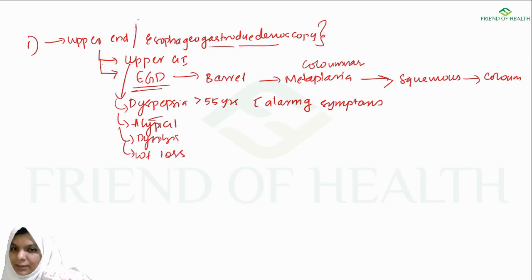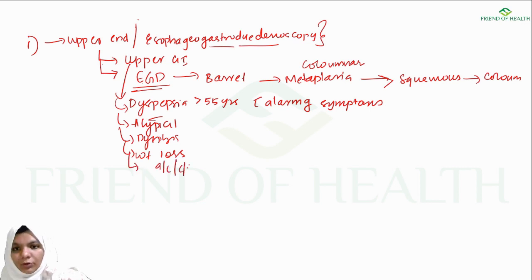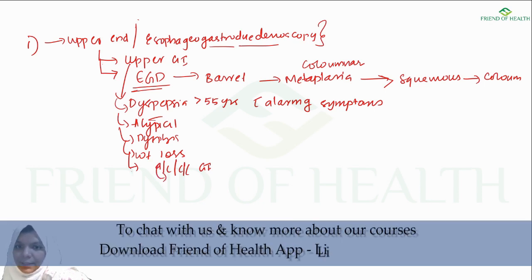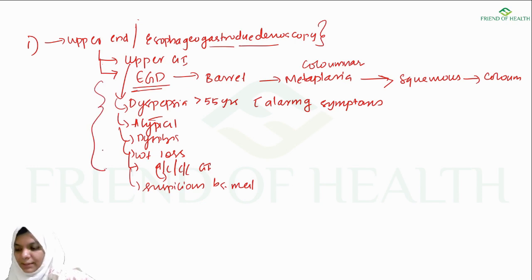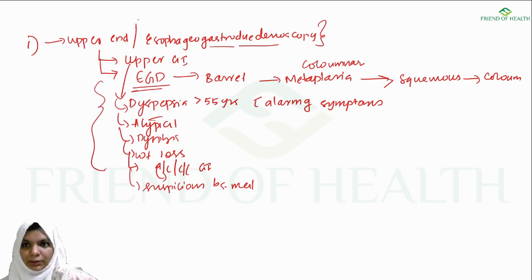Further indications include unexplained weight loss and a person not responding to any medicine with acute or chronic GI bleeding. A suspicious finding on barium meal is also an indication for EGD. These are the most important points, taken from Harrison's.